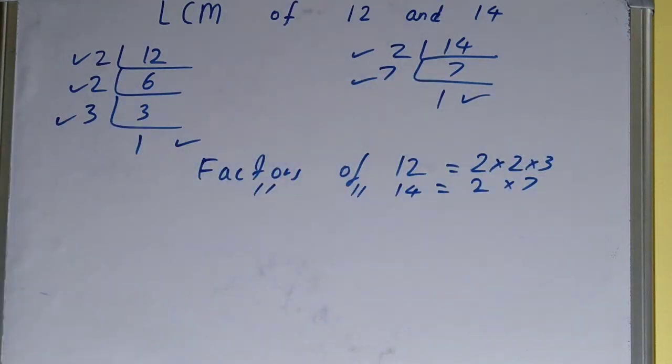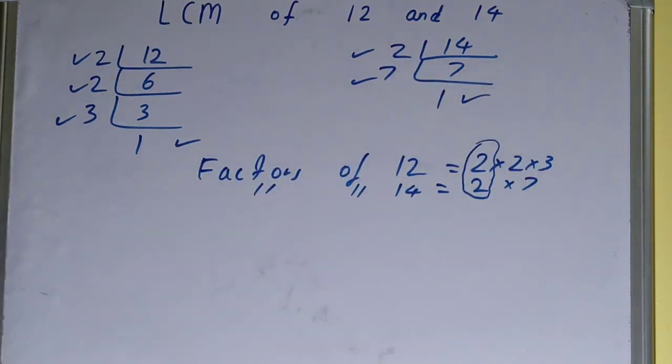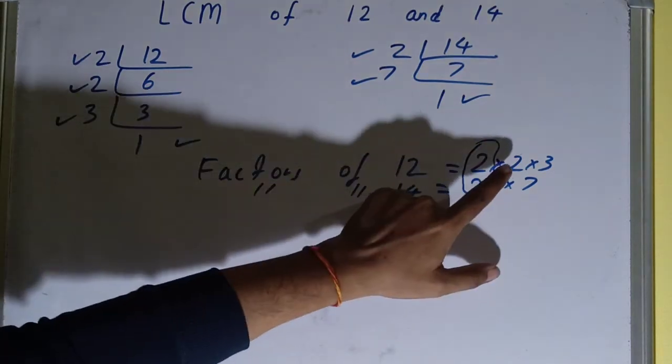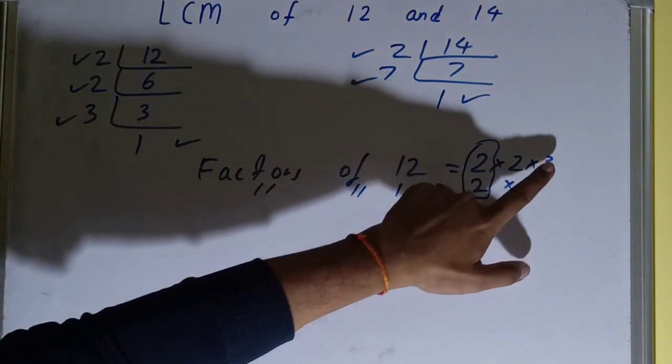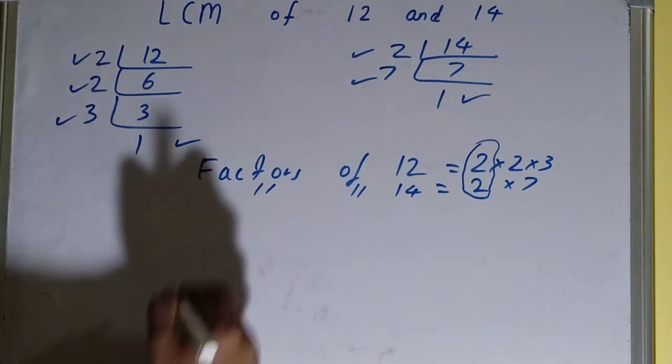So can we spot any pair in these numbers? Yes, this 2 and this 2. So we will circle it out. Can we spot any other pair? This is 2 and this is 7, no. This is 3 and this is 7, no. So leave it like that.